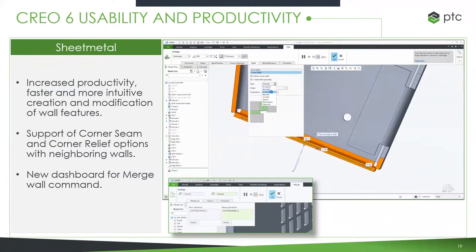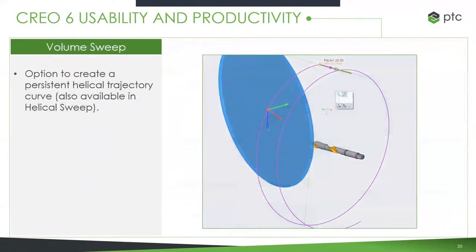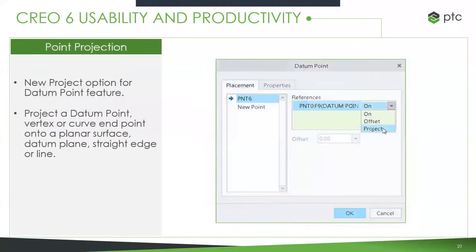We've improved support for corner seam and corner relief with neighboring walls, and there's a new dashboard for the merge and wall command. Going off of sheet metal, the next thing is volume sweep — new to Creo 5, where you can do a volumetric sweep that cuts material. Now you have the ability to create a persistent helical trajectory curve and keep that path, turning it into a toolpath. For datum points, there's now a new project option to project a datum point, vertex, or curve endpoint onto a planar surface, datum plane, straight edge, or line.